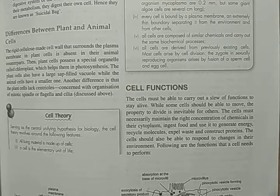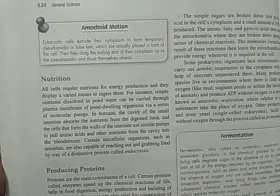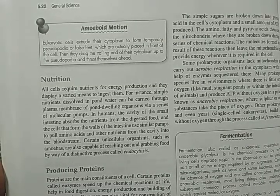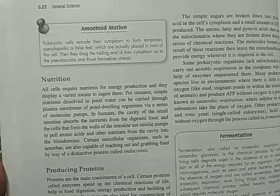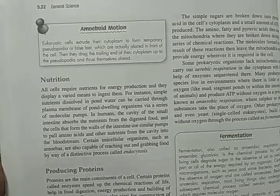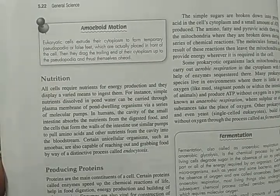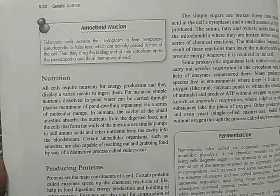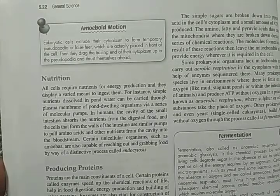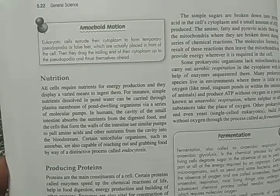The following are the functions that a cell needs to perform: nutrition, and then amoeboid motion. Eukaryotic cells extrude their cytoplasm to form temporary pseudopodia, or false feet, which are placed in front of the cell. They drag the trailing end of their cytoplasm up to the pseudopodia and thrust themselves ahead — that is why it is called amoeboid motion.